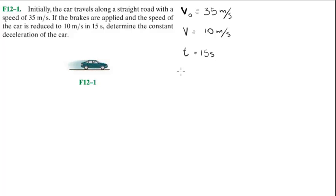the formula we're going to use is V equals V0 plus A times T, which you can get at the end of the book or any formula sheet.